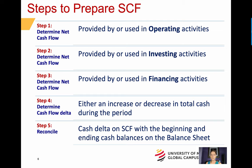The Statement of Cash Flows is always prepared with the sections listed in the same order: net cash provided by or used by operating activities, then investing activities, then financing activities, and at the bottom, non-cash flow investing and financing activities.